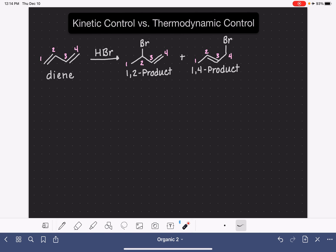In the 1-2 product, the hydrogen and the bromine of HBr are added to carbons number 1 and 2 of the diene system. And in the 1-4 product, the hydrogen and the bromine are added to carbon number 1 and carbon number 4.